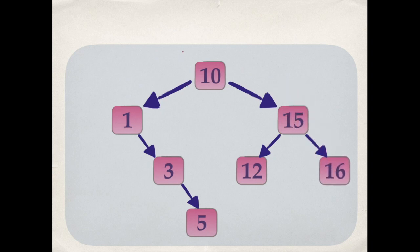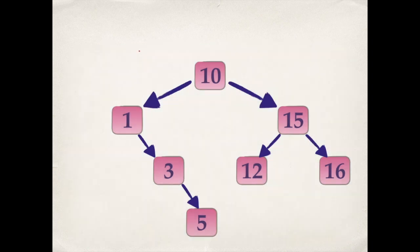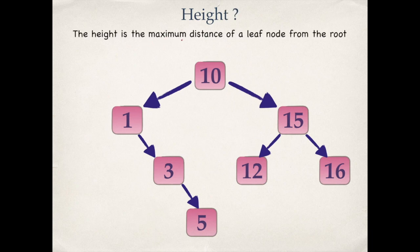This is the final binary search tree after inserting seven numbers. Now let's find the height of this tree, defined as the maximum distance of a leaf node from the root. Ten is the root and we have three leaves: five, twelve, and sixteen. We'll find the distance in each case and choose the maximum value.